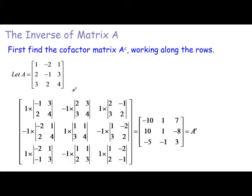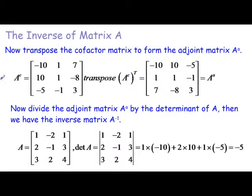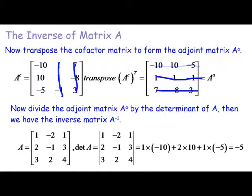Now we transpose the cofactor matrix. This row becomes this column, this row becomes this column, and this row becomes this column — that's what the transpose does, it swaps rows and columns. We now have the adjoint matrix, A^adj.